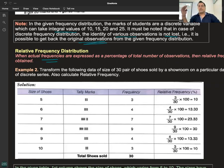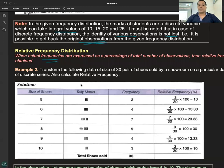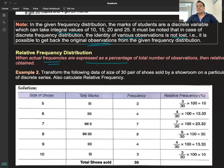What is relative frequency distribution? When the actual frequencies are expressed as a percentage of the total number of observations, then relative frequencies are obtained.